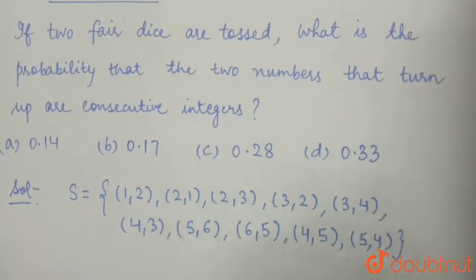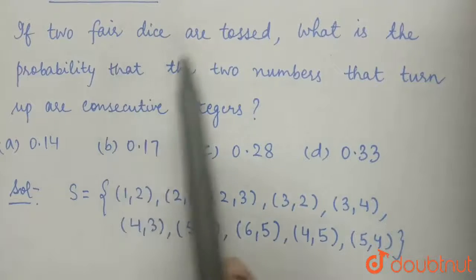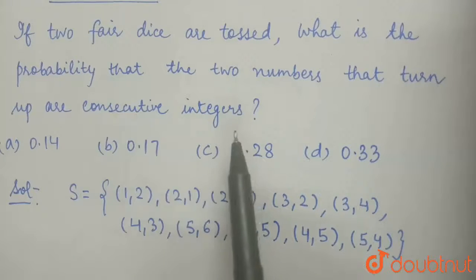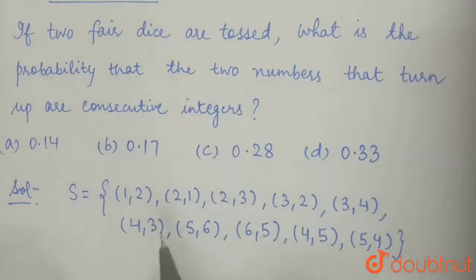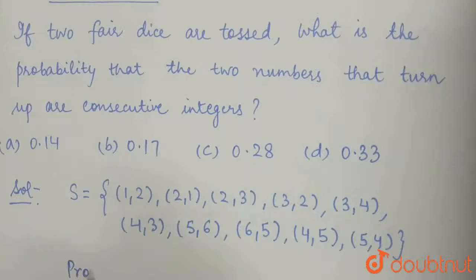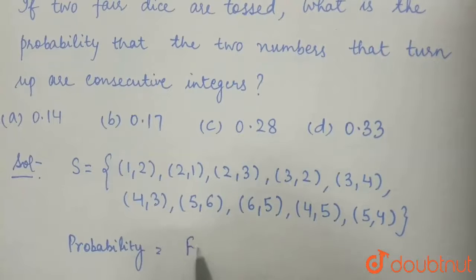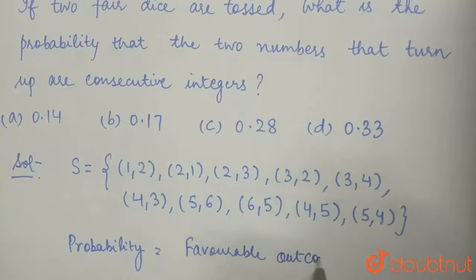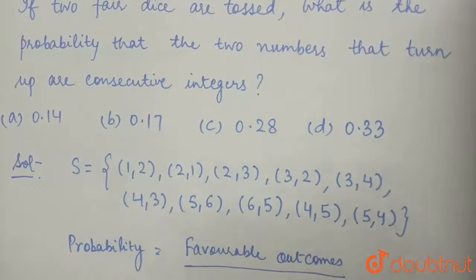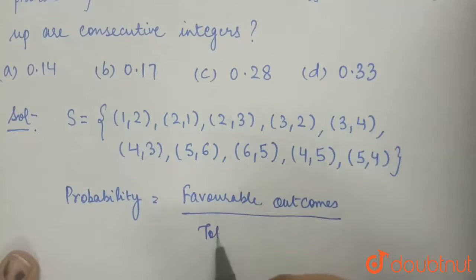These are all the favorable entries that we will get when the two dice are tossed and we will get consecutive integers. So now probability is equal to favorable outcomes upon total outcomes.